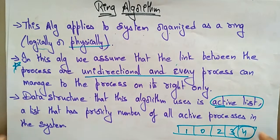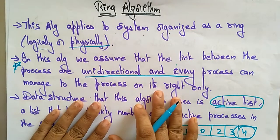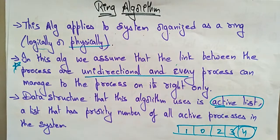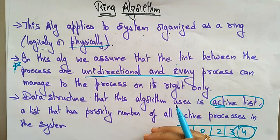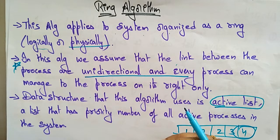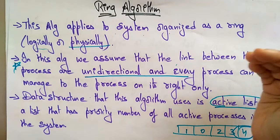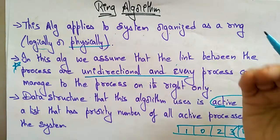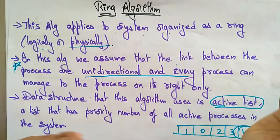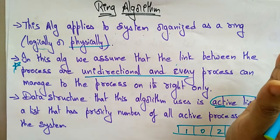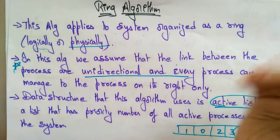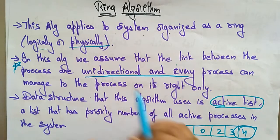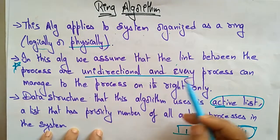Welcome back. Moving to the next type of algorithm in election algorithms: the ring algorithm. In the previous video I explained the bully algorithm, and another type is the ring algorithm. In either the bully or the ring algorithm, the main concept is we need to elect one process as a coordinator, and that coordinator is going to manage all the processes in the network. Now let's see what this ring algorithm does.